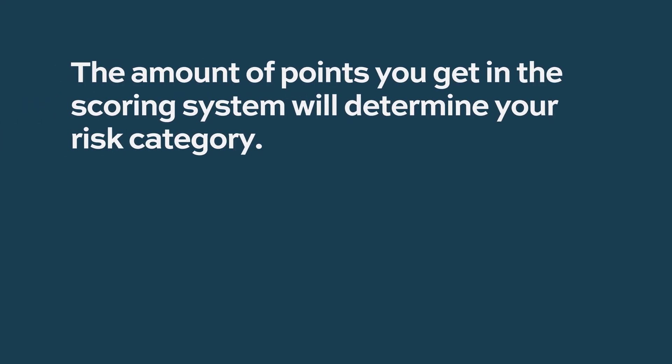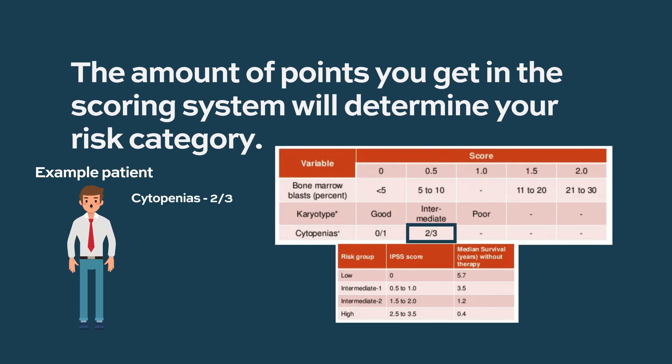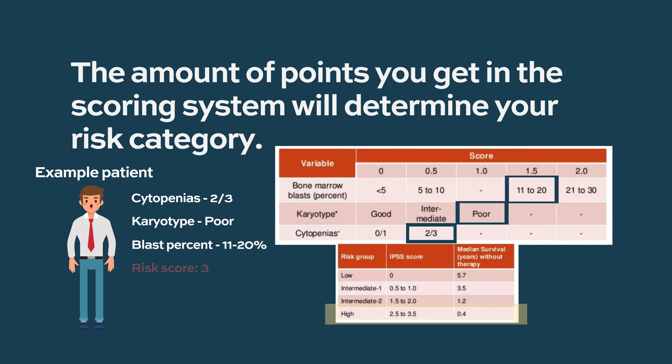In MDS, if you're above 20 to 30% blast cells, you're not MDS anymore — you're leukemia. The percentage of those blasts also goes into the scoring system, so you get points for certain things. There are point cutoffs where you say you have this many points and you're low risk, or this many points and you're high risk. That's how we traditionally separate people out.